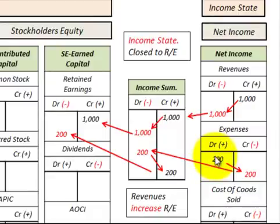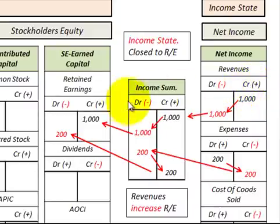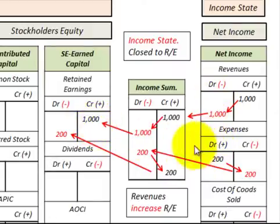In the case of expenses, we do the same thing only in reverse. We had a debit amount, credit it to close it, debit the income summary, then credit to close it, and debit retained earnings. So if we've got a credit on the income statement side, we're going to have a credit in retained earnings regardless. If it's an expense, it gets debited to retained earnings. If it's a debit on this side, it's going to be a debit to retained earnings.